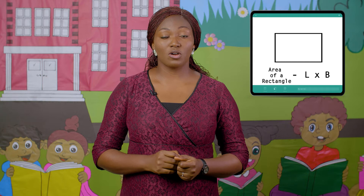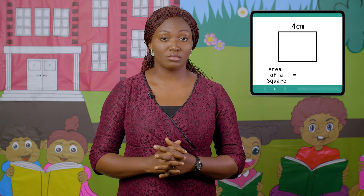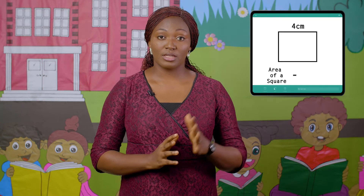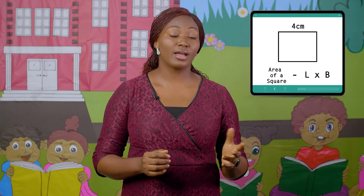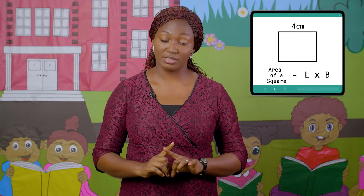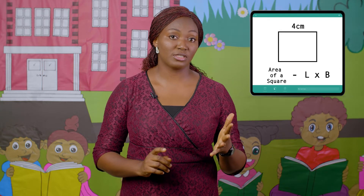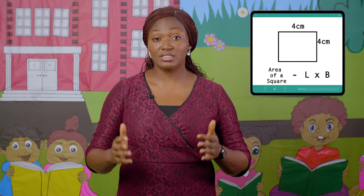Given the length of a square to be four centimeters, the question says calculate the area. Length times breadth. Remember, a square has equal sides, which means if the length is four centimeters, the breadth is definitely four centimeters.